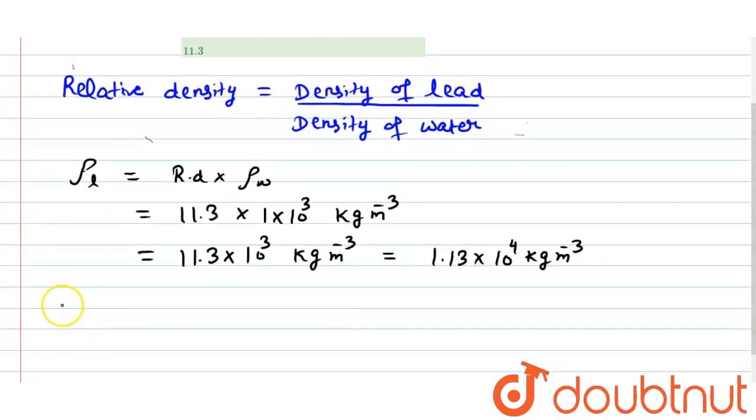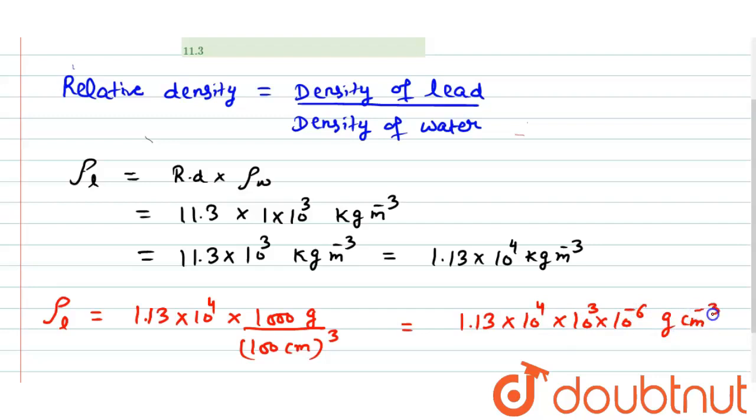Now, we have to find out density of lead in gram per centimeter cube. So, 1.13 × 10 to the power 4 multiplied 1 kg is equal to 1000 gram divided by 1 meter is 100 centimeter whole cube. So, we can write it as 1.13 × 10 to the power 4 × 10 to the power 3 × 10 to the power minus 6 g per centimeter cube. After multiplying these, we get the value 1.13 × 10 gram per centimeter cube. So, we can write it as 11.3 gram per centimeter cube. This is the answer in gram per centimeter cube.